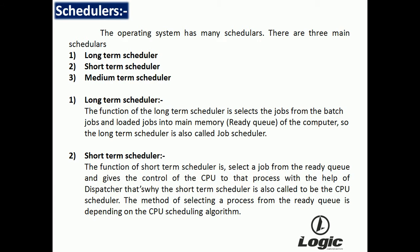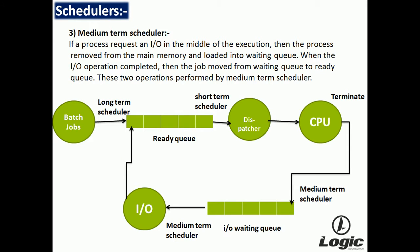Next is the medium-term scheduler. If a process requests an I/O operation in the middle of execution, the process is removed from the main memory and loaded into the waiting queue. When the I/O operation is completed, the job moves from the waiting queue to the ready queue. These two operations are performed by the medium-term scheduler.